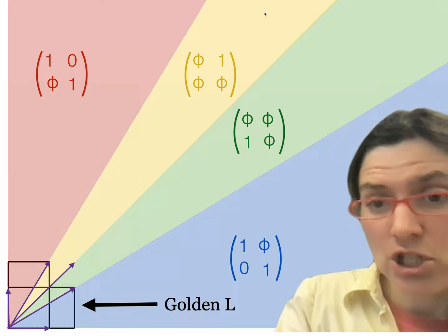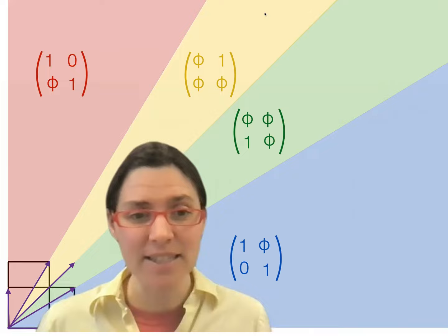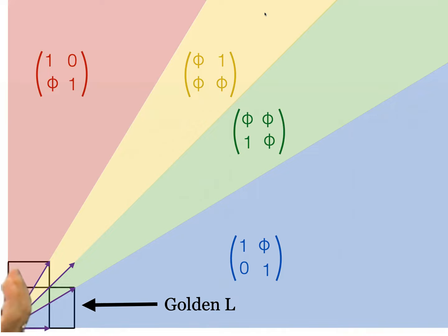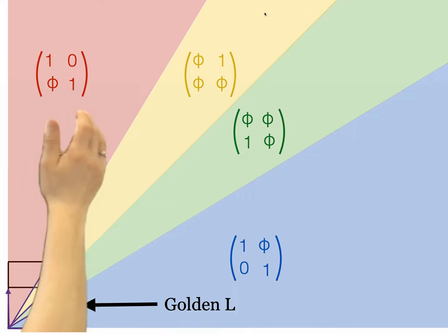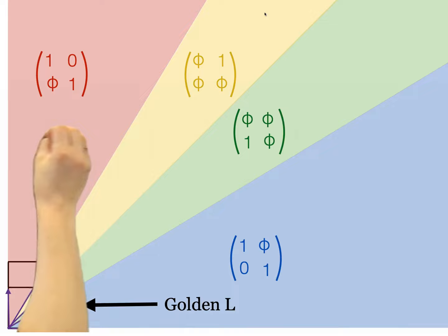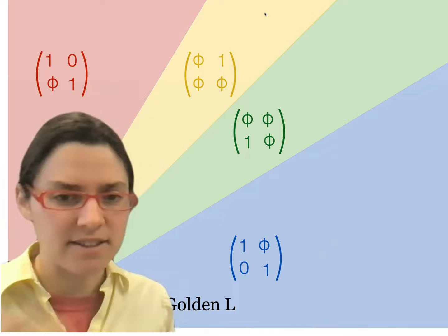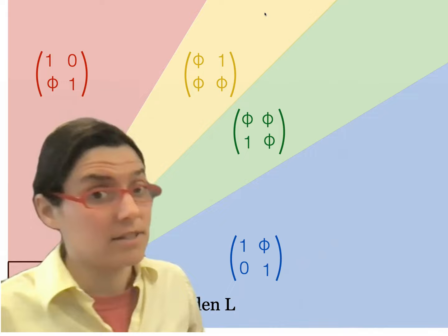Now we're going to kick it up a notch. Instead of putting a square in the corner of our first quadrant, we put the golden L. The vertices of the golden L separate the first quadrant into four sectors: slopes less than 1/φ, slopes between 1/φ and 1, slopes between 1 and φ, and slopes above φ. There are matrices that map the first quadrant to each of these sectors — the unique ones with determinant one, so they're area preserving.